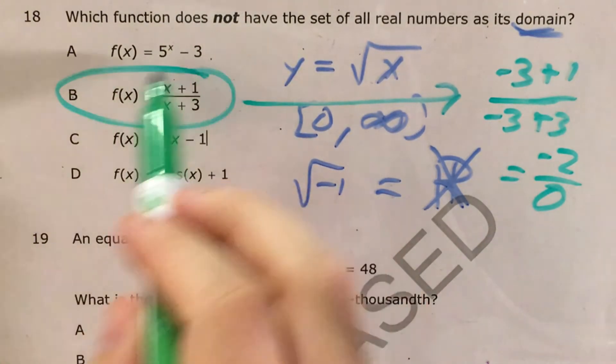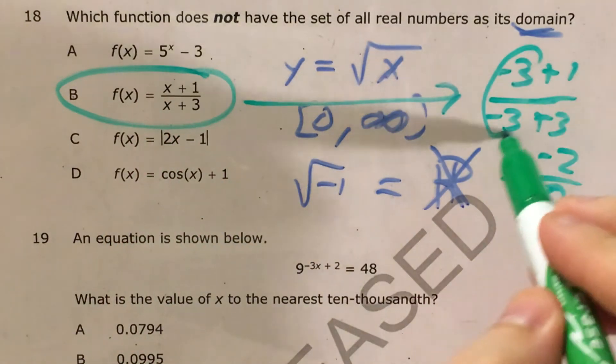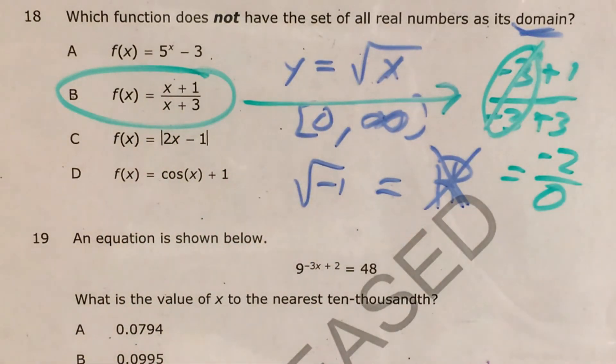Therefore, choice B is the answer that does not have all real numbers as its domain, because negative 3 is the one number that makes it go crazy. And therefore, if one number's out, we can't say all real numbers are its domain.